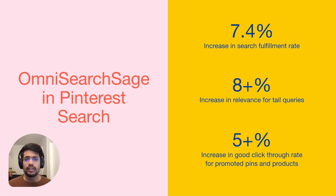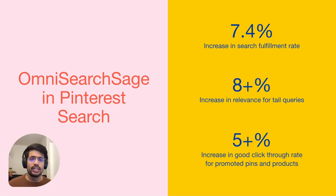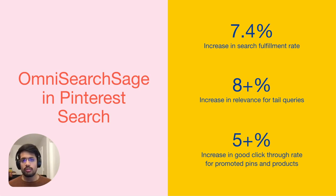OmniSearch has been deployed at Pinterest and has become an integral part of the search stack, powering embedding-based retrieval for standard and product pins, queries, and ads. It also plays a significant role in multi-stage ranking and query classification models.